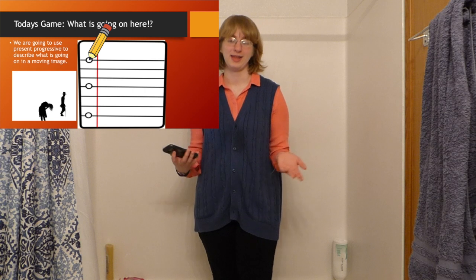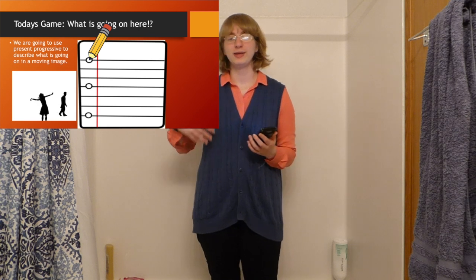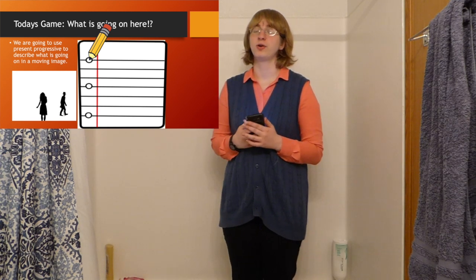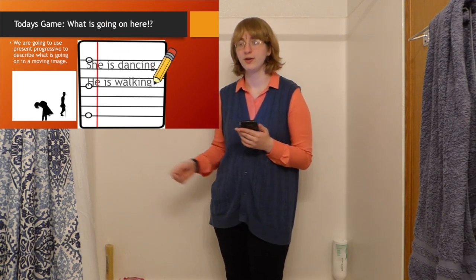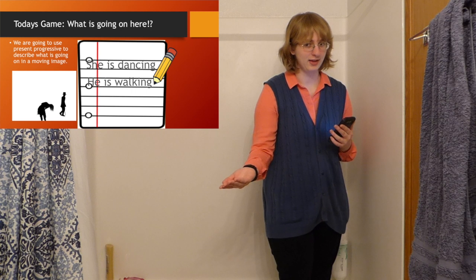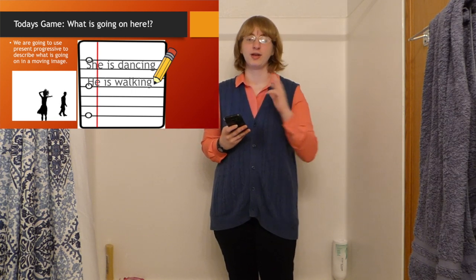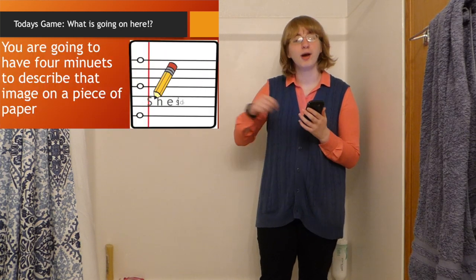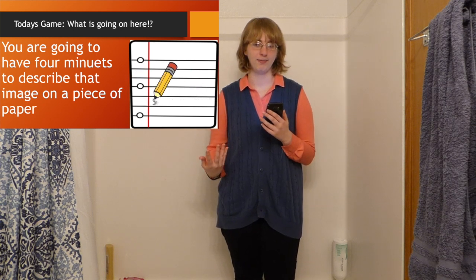So, now we are going to go do today's activity. The name of the activity is, What's going on here? So, we are going to be given an image that is moving like this image. And we are going to write down and describe what is going on in this image. For example, she is dancing and he is walking. We are given four minutes to do this. And you got to write and describe as many things as you think is important on that piece of paper.